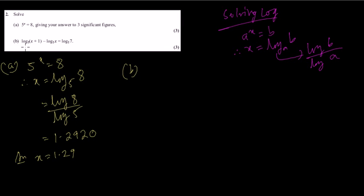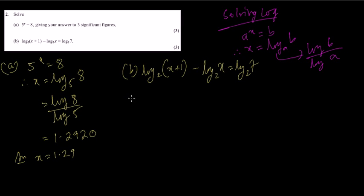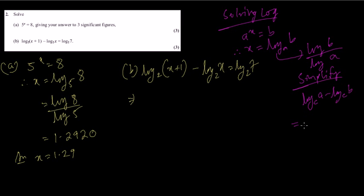Question 2b: log base 2 of (x plus 1) minus log base 2 of x equals log base 2 of 7. This is a log solving question involving logs. In order to do this sum, we need to simplify the log first into a single form. Simplify: log a minus log b equals log(a divided by b).